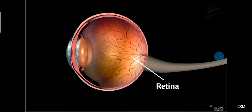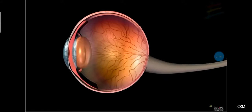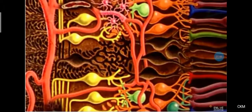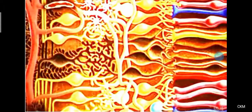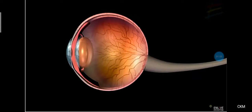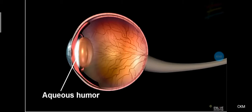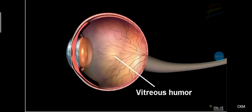The retina has two points: the fovea and the optic disc. Light transfers from the cornea to the lens, and from the lens to the retina, and then to the optic nerve. The retina contains cones and rods — photosensitive cells which detect light, form images, and differentiate colors. The anterior chamber contains aqueous humor and the posterior chamber contains vitreous humor, which is a jelly-like fluid.